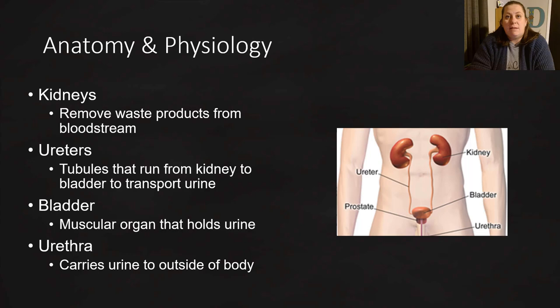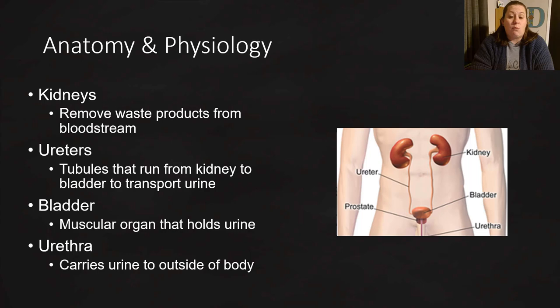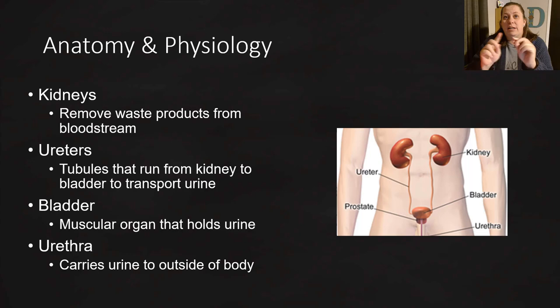There are differences in the urinary system between males and females, mainly with the urethra. In females, the urethra is only about an inch and a half long, creating a very short distance from the outside world to the bladder. This causes some issues with certain urinary disorders, making females more prone to certain conditions. In males, the urethra is about six to eight inches long and travels through the penis. There is also a connection between the urethra and the reproductive system in males, whereas in females those systems are completely separated.